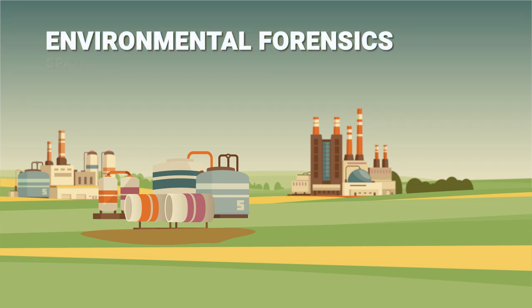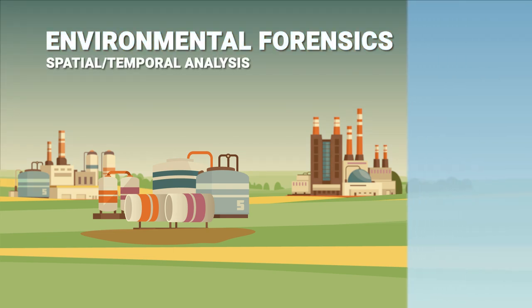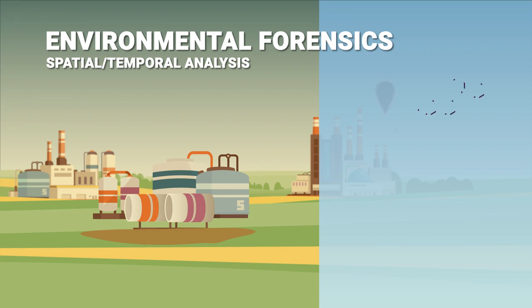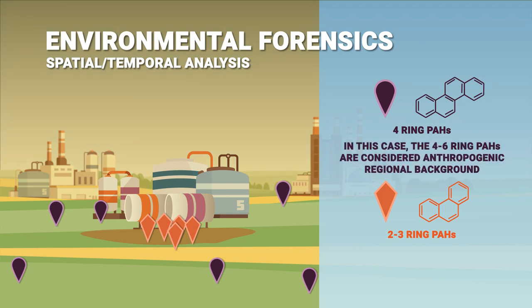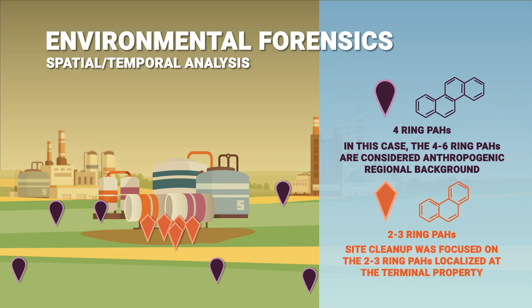A third technique described in the guidance is spatial temporal analysis. Consider a site where four-ring PAHs with a characteristic pyrogenic signature occur over a broad area and at depth, while two to three ring PAHs with a characteristic pyrogenic signature occur in a localized area near a more recent petroleum terminal and closer to the surface. This observation is consistent with the known history of the site. In this case, the four to six ring PAHs are considered anthropogenic regional background, and site cleanup is focused on the two to three ring PAHs localized at the terminal property.